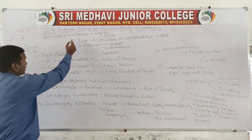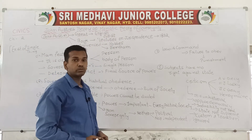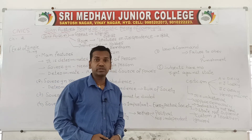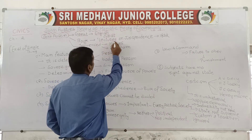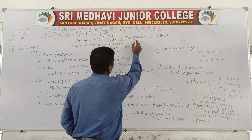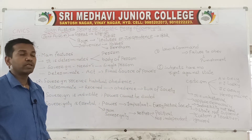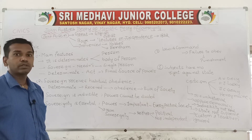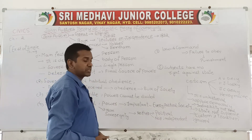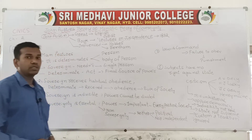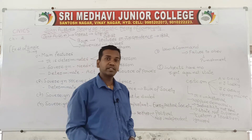John Austin is one of the great English jurists — a person who studies the law. He wrote different lectures, compiled in a book called 'Lecture on Jurisprudence,' which was published in 1832. In this book, he wrote briefly about the monistic theory of sovereignty.